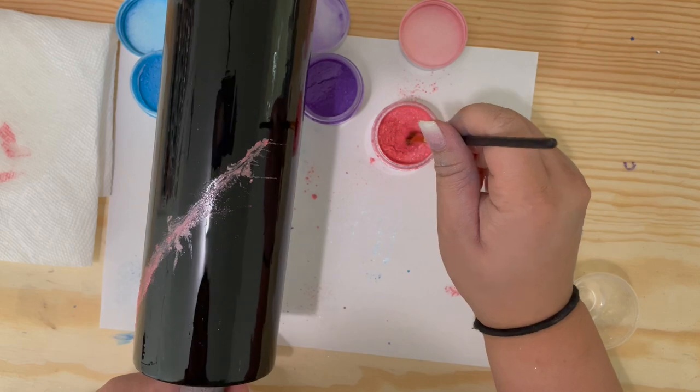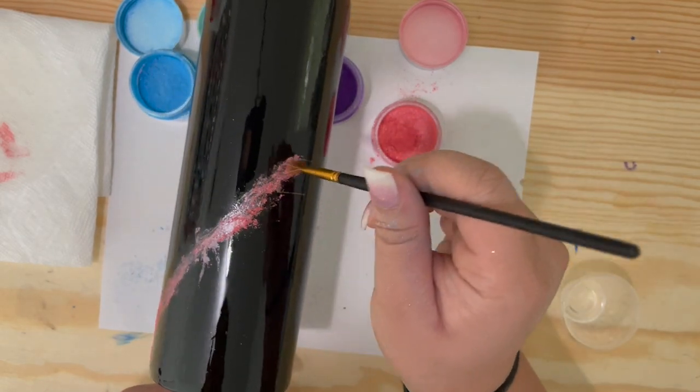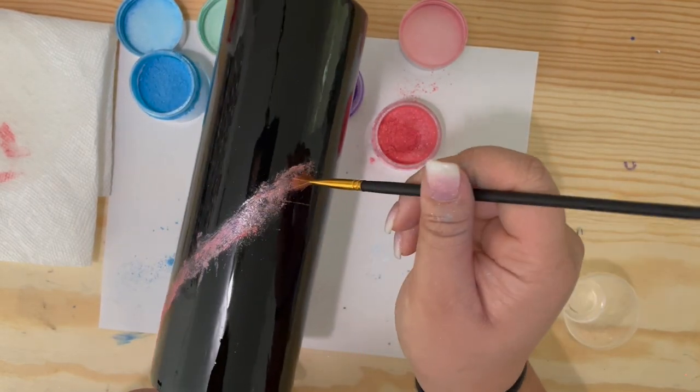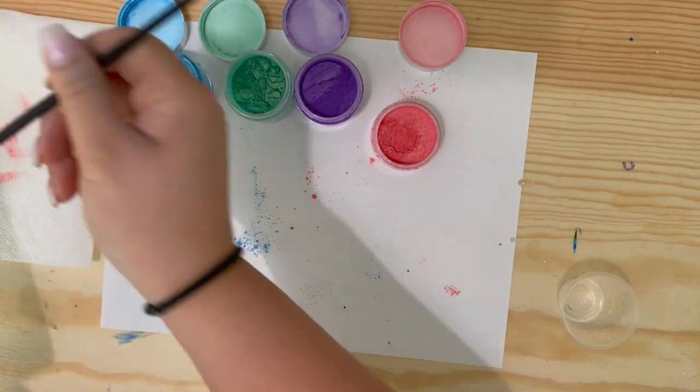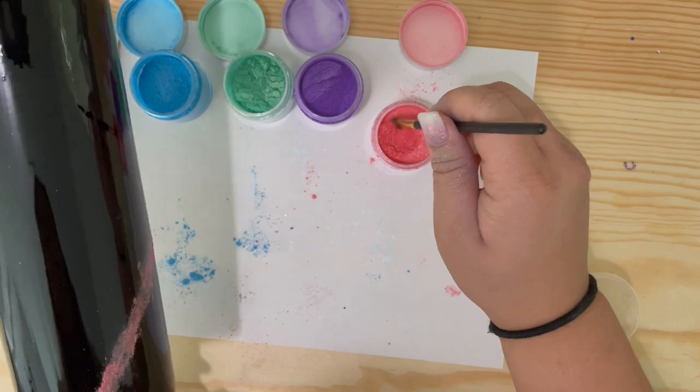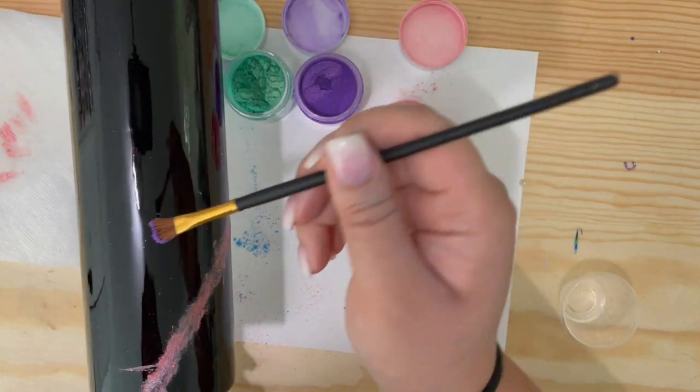So I'm just going to keep doing this all around the tumbler. I'm going to mainly focus the mica powders towards the top third of the tumbler. Because we are going to be putting on a decal on the bottom half.